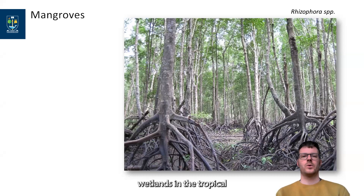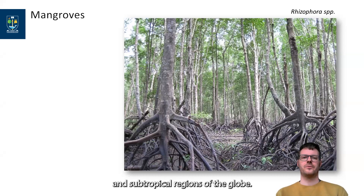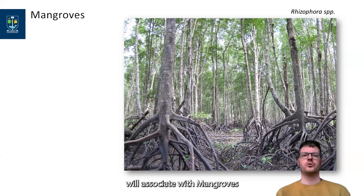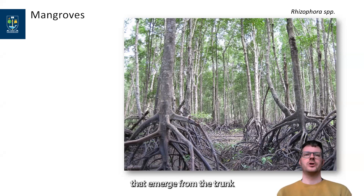Mangroves are intertidal wetlands in the tropical and sub-tropical regions of the globe. This genus here, Rhizophora, is probably the one that most people will associate with mangroves because of its typical roots that emerge from the trunk and reach down to the mud.